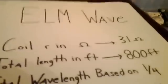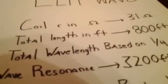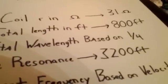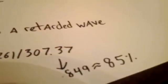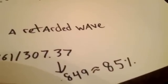That will be the resonant frequency. Now let's go to our test data. Here's our data for the electromagnetic transverse waveform. Resistance: coil, 31 ohms. Total length in feet: 800. Total wavelength based on quarter wave resonance: 3200 feet. Resonant frequency based on the velocity of light: 307.37 kilocycles per second. Actual frequency measured: 261 kilocycles per second. Thus a retarded wave — the ratio of those two gives us 85% the velocity of light.